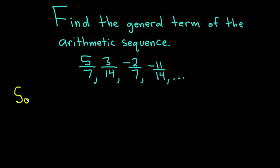Let's go ahead and carefully work through this solution. Let's start by writing the sequence with a common denominator. So it looks like 14 is a good choice. We can take 5 over 7 and multiply it by 2 over 2.